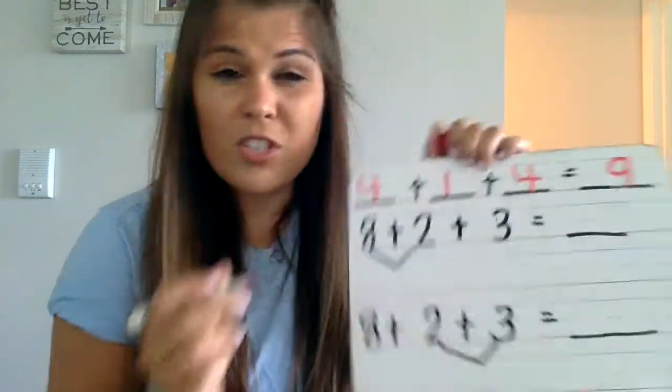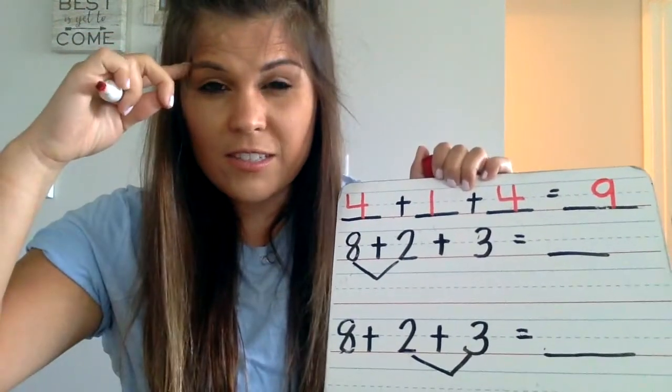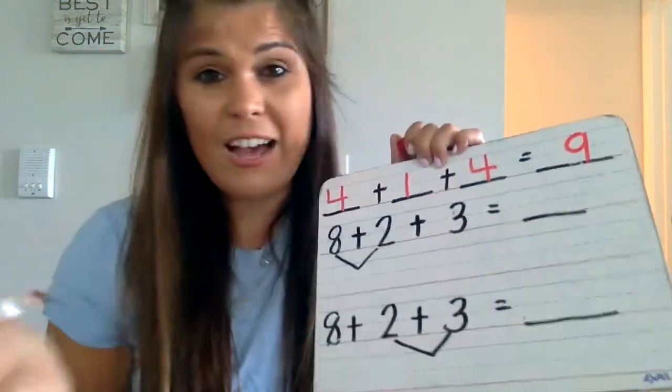I know four plus one equals five, and five plus four equals nine. I added two numbers together first, figured out the sum in my brain, and then added the other group.